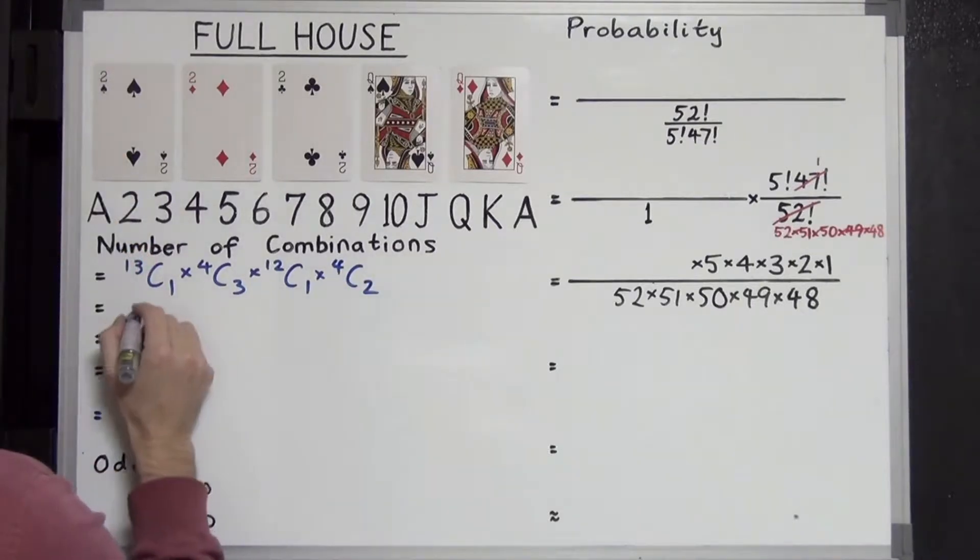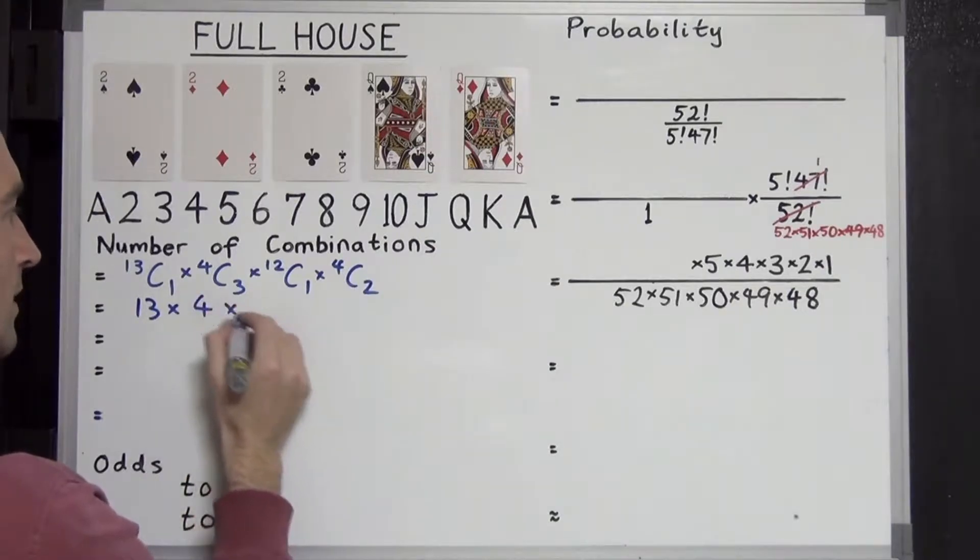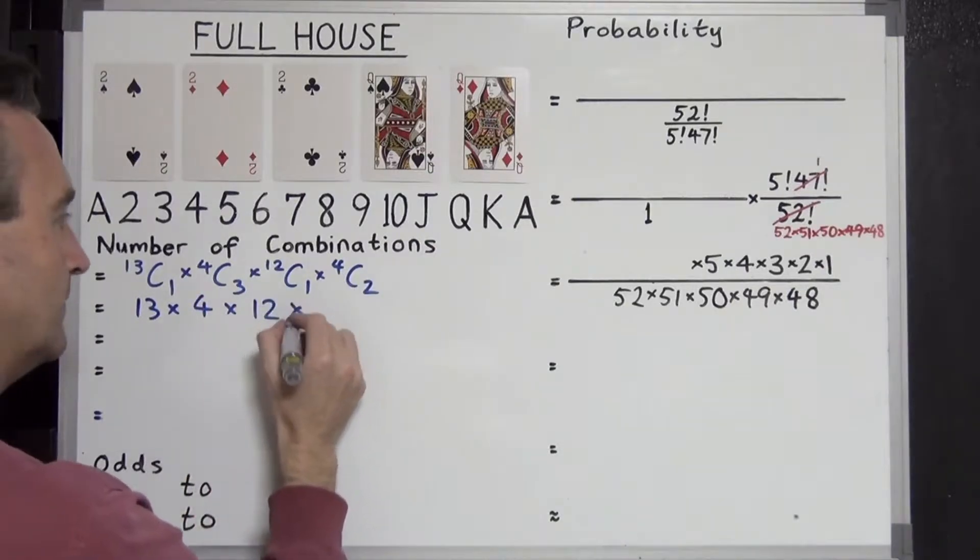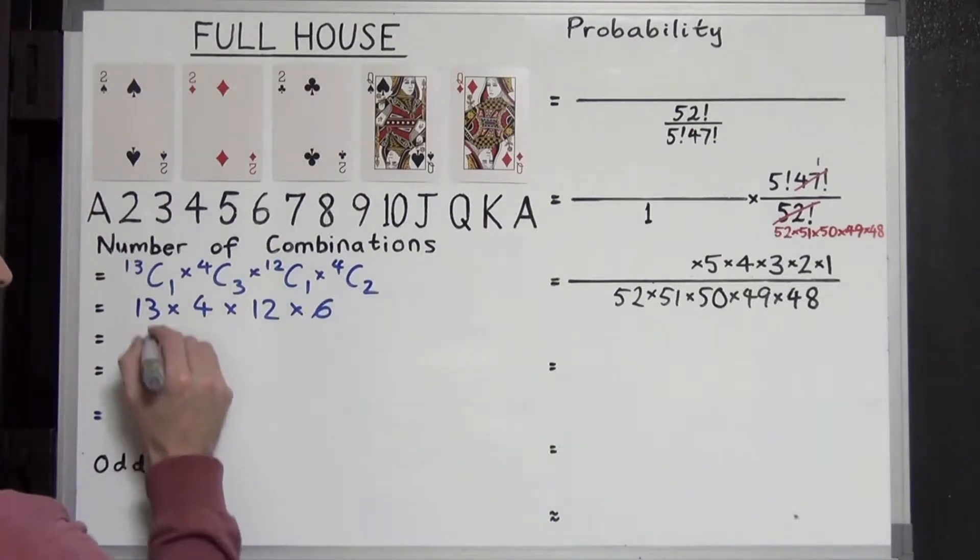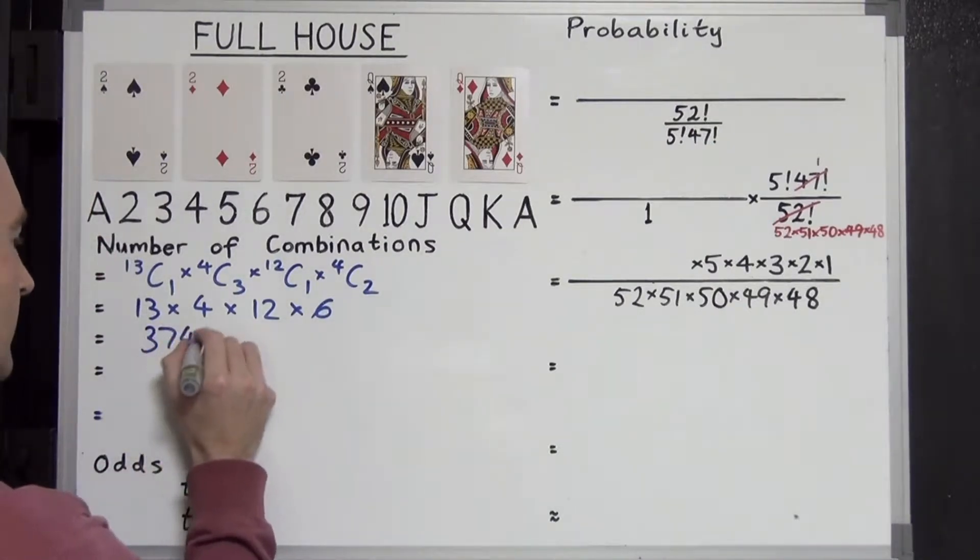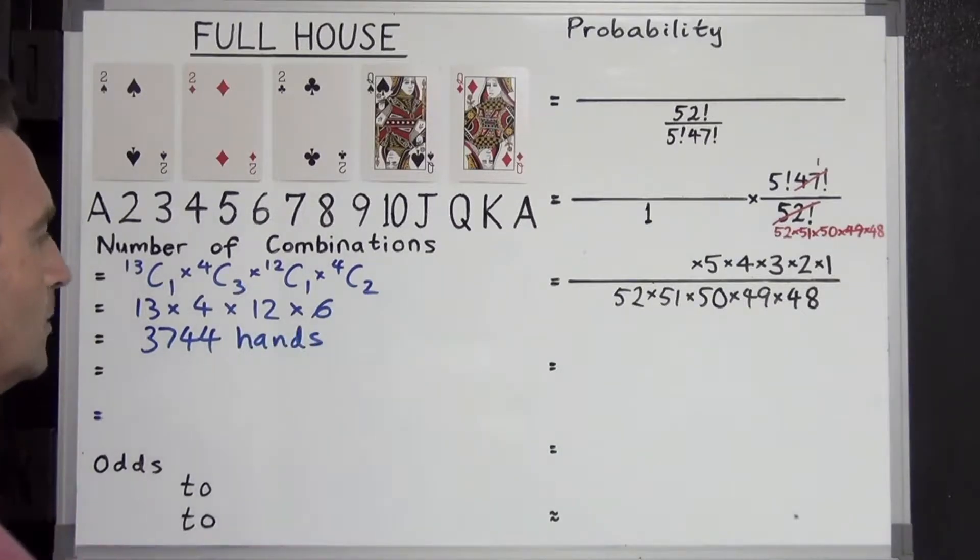Evaluating these: 13C1 is 13, 4C3 is 4, 12C1 is 12, and 4C2 is 6. Evaluating this you're going to get 3,744 hands. Almost 4,000 possible full house hands.